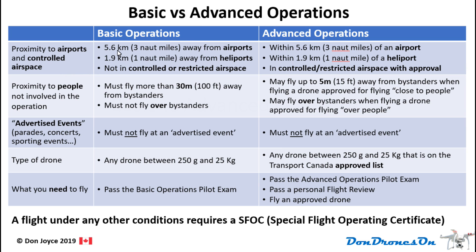Going forward I'll stick with metric distances. You must stay 5.6 kilometers away from airports, 1.9 kilometers away from heliports, and you may not fly in controlled or restricted airspace. Controlled airspace is typically around aerodromes. Restricted airspace is additional areas, typically of a military nature, or particular spaces like over Parliament Hill. If you have your advanced operations certificate, you may fly in these zones close to airports or in controlled or restricted airspace if you have approval.